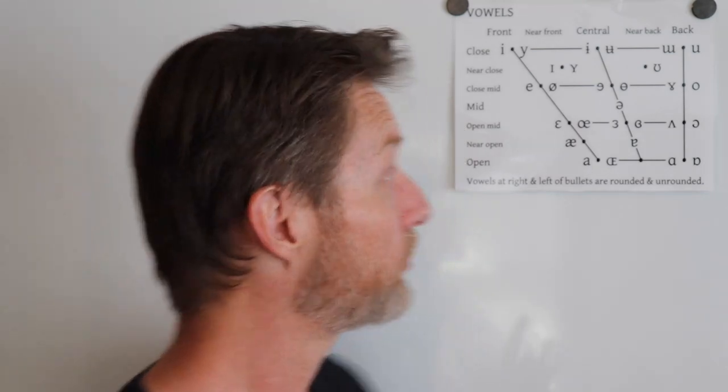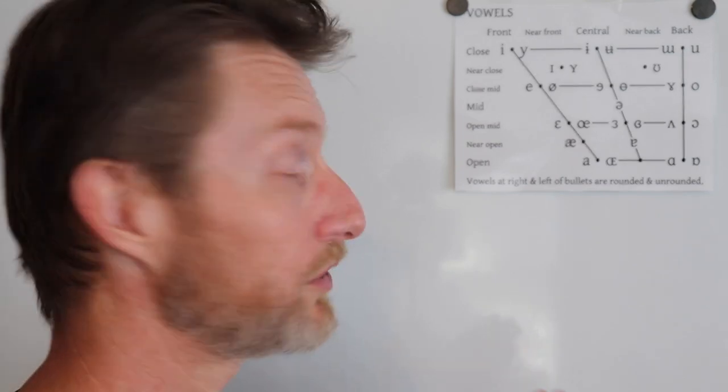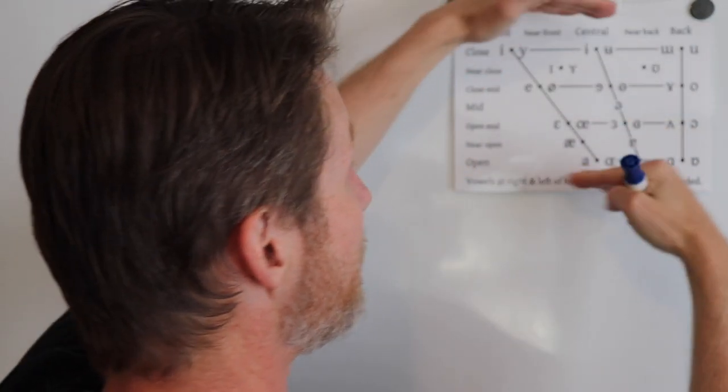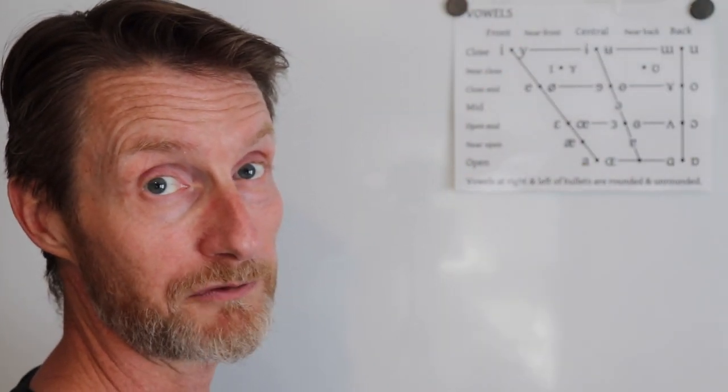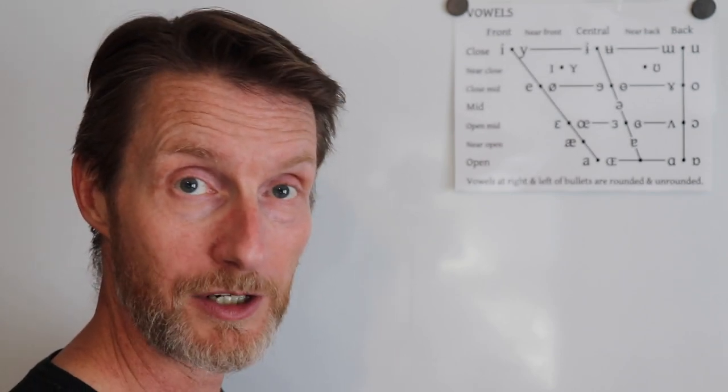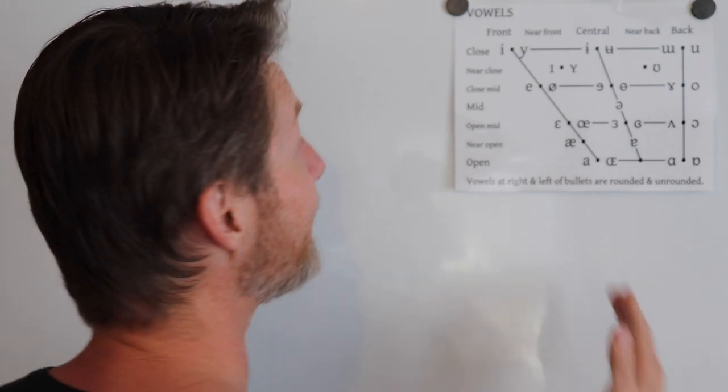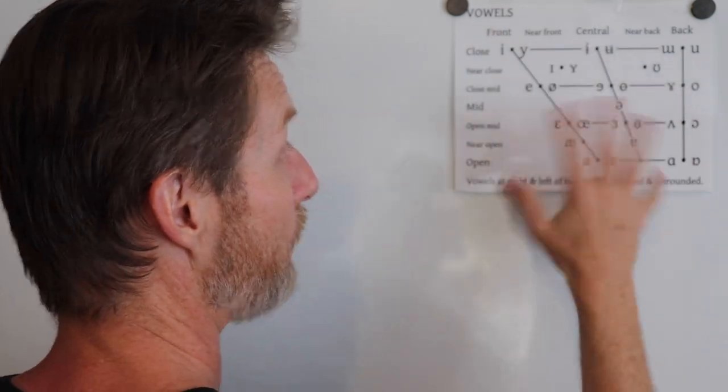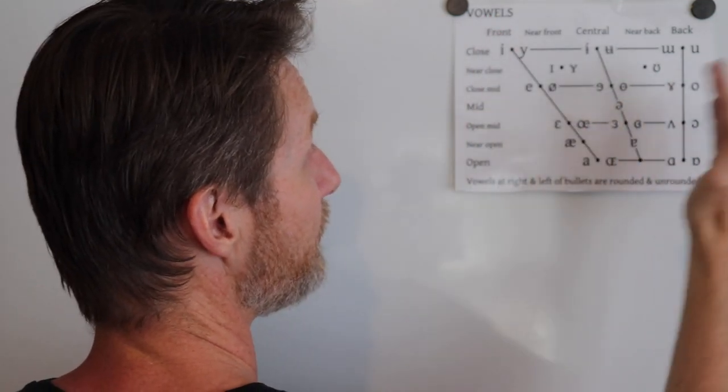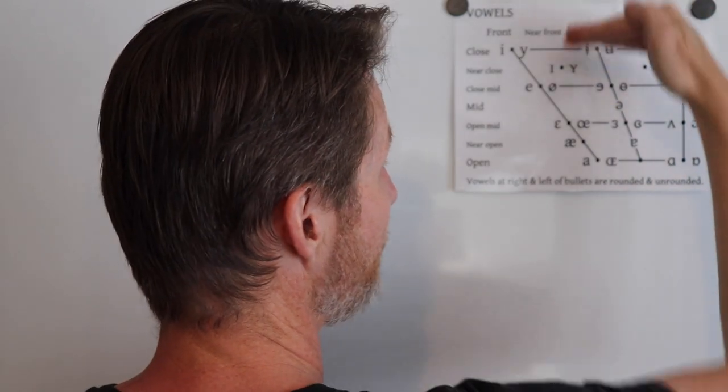So I'm talking about these vowel distinctions. This is the vowel quadrilateral in phonetics. The IPA, the International Phonetic Association, created the International Phonetic Alphabet. This vowel quadrilateral shows the front of the mouth, the back of the mouth, the top, the bottom. Here at the back is what I call Hell's Corner.